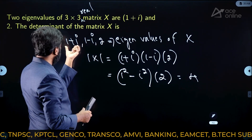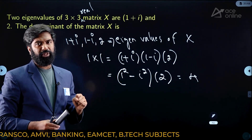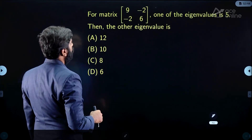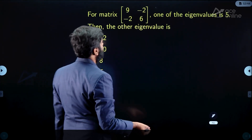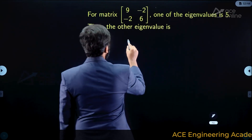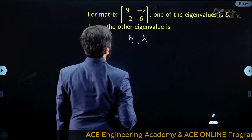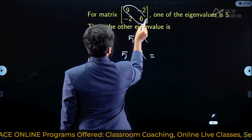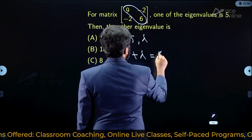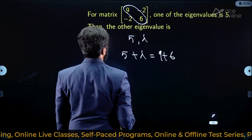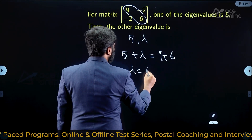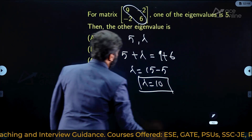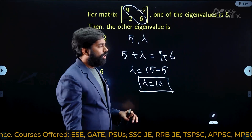Next question: for a 2×2 matrix, one eigenvalue is 5, what is the other eigenvalue? Let the other eigenvalue be lambda. The sum of eigenvalues must equal the trace: 5 + lambda = 9 + 6 = 15. Therefore lambda = 15 - 5 = 10. If you know that the sum of eigenvalues equals the trace, you can solve this in a fraction of a second.